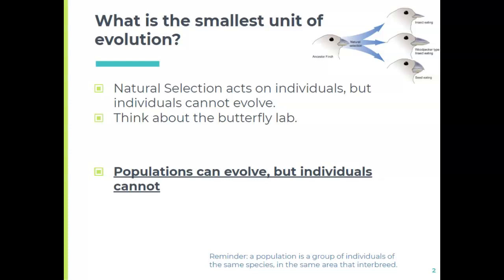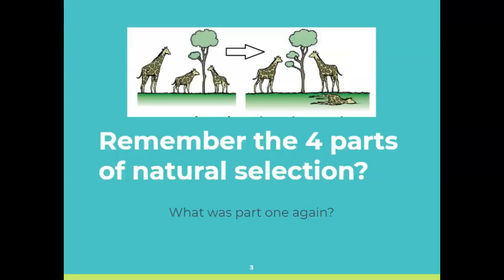Natural selection acted on that individual, which meant that maybe it lived and reproduced, or it didn't live to reproduce. But that individual didn't just up and change its traits in the middle of its life. That's a big, important foundational piece about this whole concept.